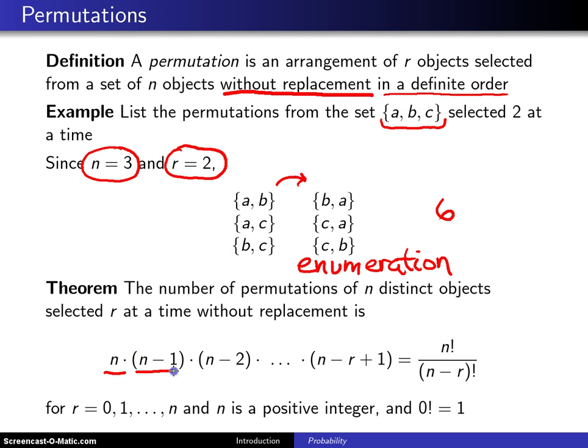Then for the second object that you select, there are n minus one different ways of doing it. So in this case, once you have that first position pinned down, there are two different ways of choosing the object that will appear in the second position.